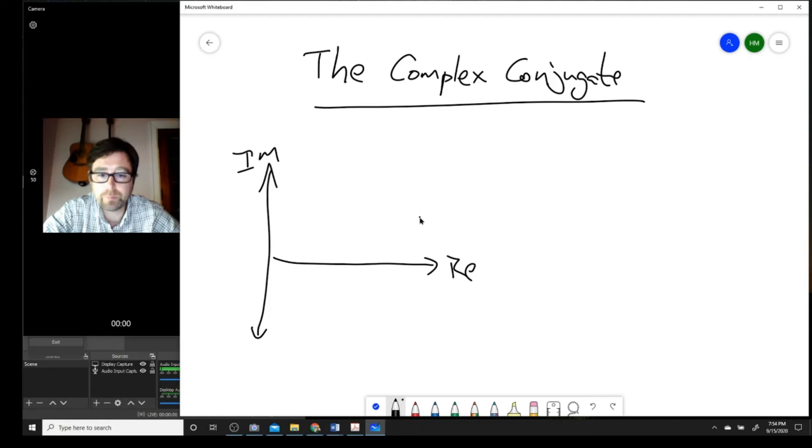The complex conjugate of a complex number can be described as the reflection of that complex number across the real axis.